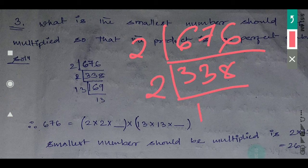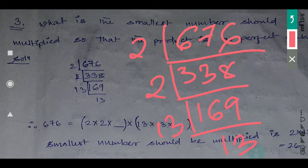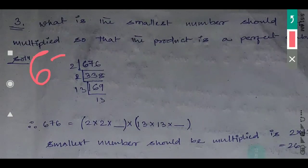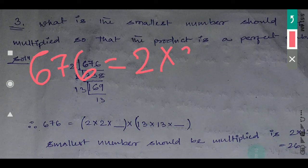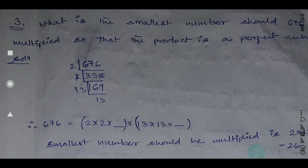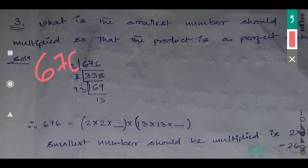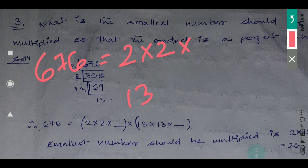So first we find the factors. Two ones are two, two twos are six — working through the division — so 676 equals 2 × 2 × 13 × 13. But the question is what is the smallest number should be multiplied to 676 to make it a perfect cube? To make it a perfect cube, we need one more factor of 2 and one more factor of 13.